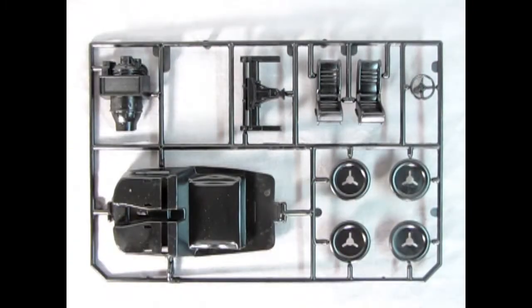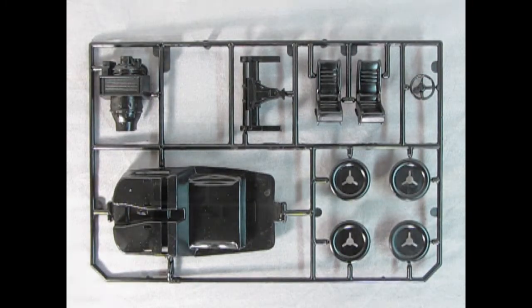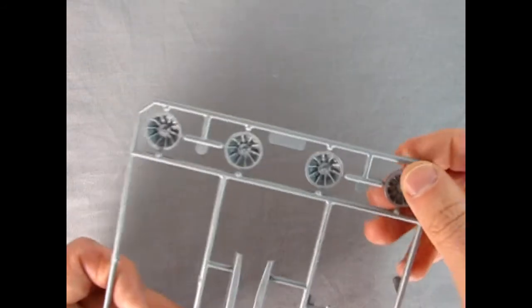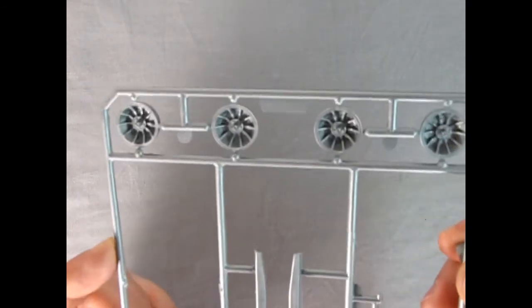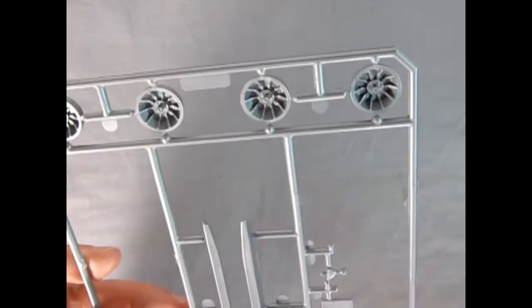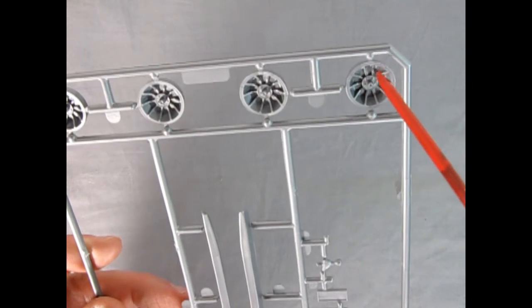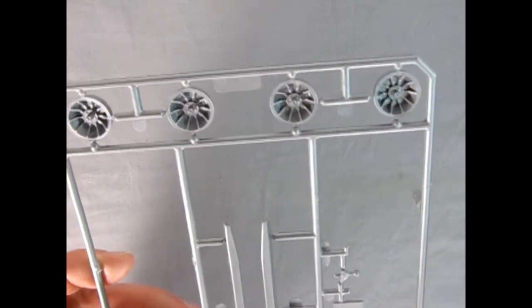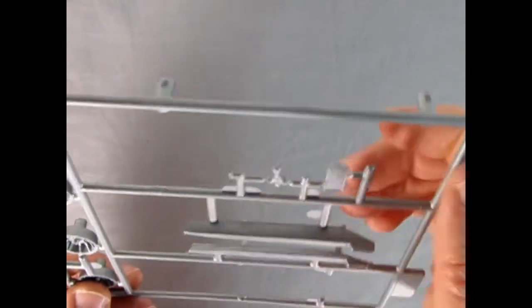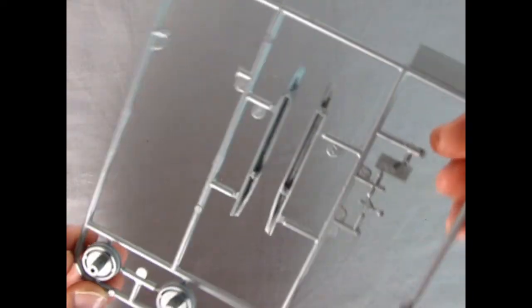And here we have our aluminum components, which of course would have looked way better if they were chromed, but I guess Testers did not want to do that. So there's our wheels. A little bit of a black paint wash down in here will make them look more like they're open. And then we've got our side exhaust dumps as well as the shift lever and our rear license plate.